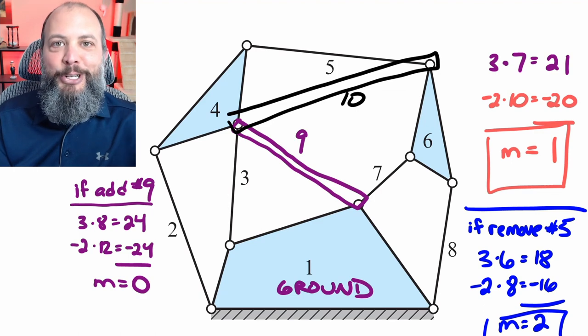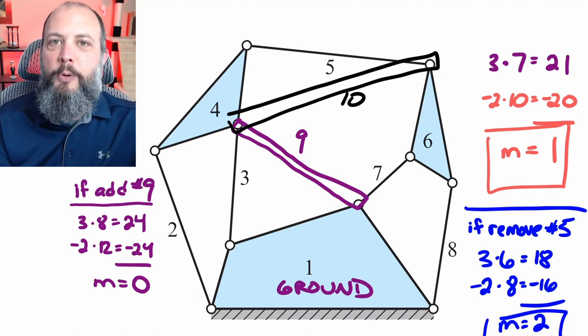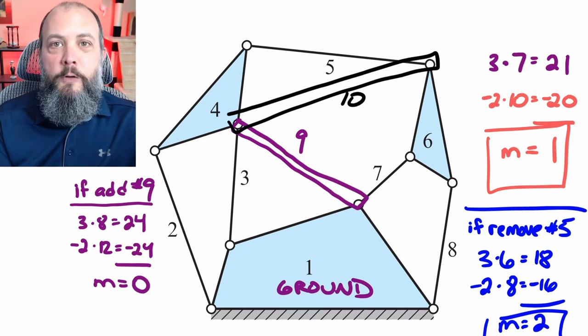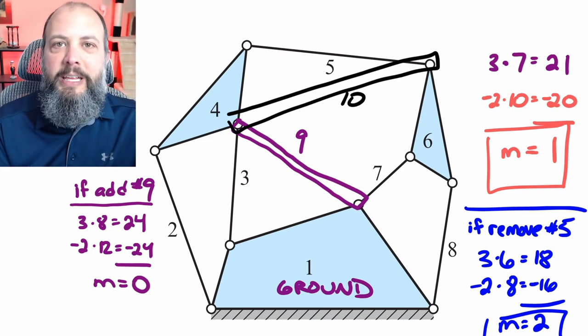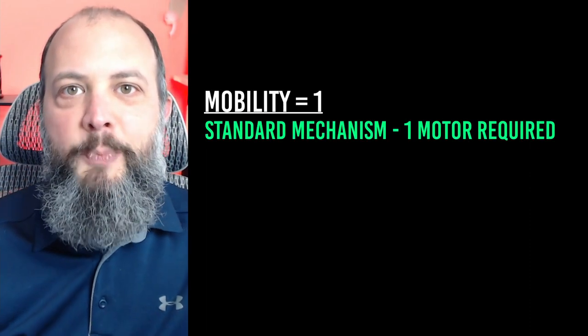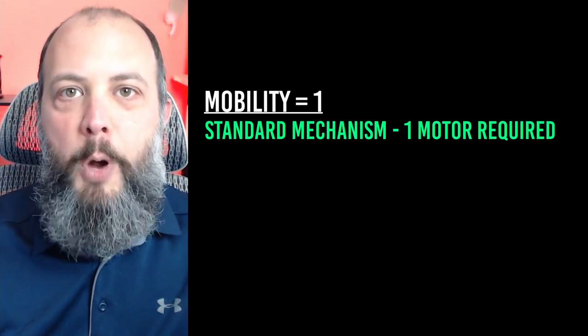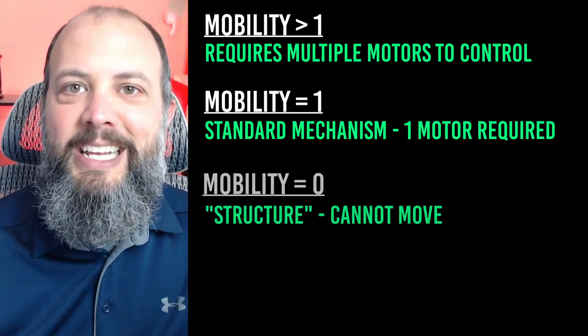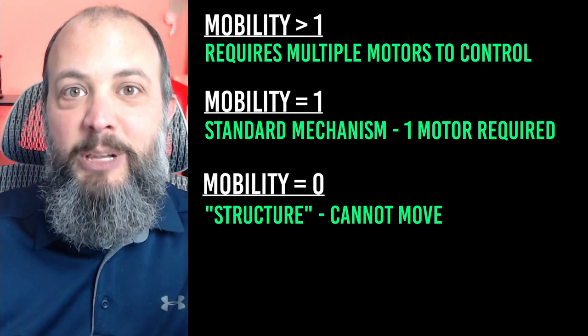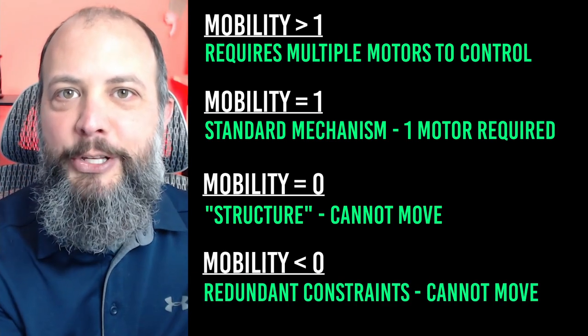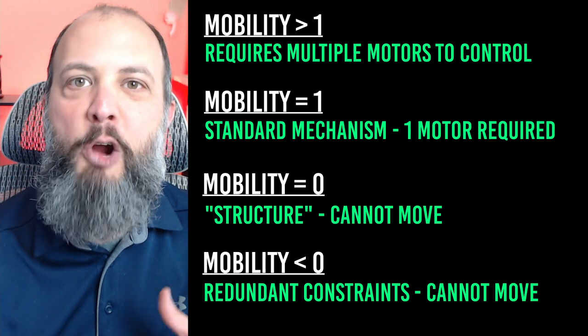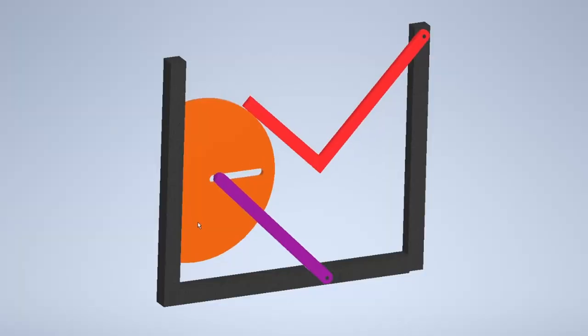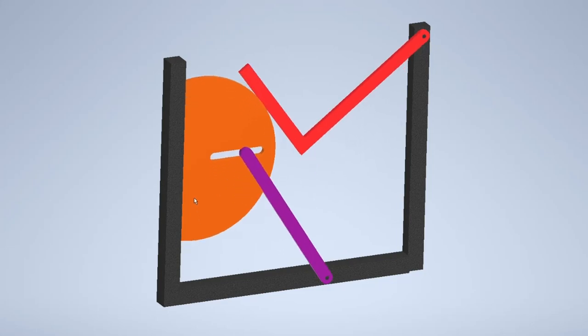And if you add another link, which I'll label here as number 10, that would lead to a mobility of negative one, which adds redundancy, which means that even if you remove a link, the system would still be locked. So mobility of one is your basic standard mechanism that can be controlled with one motor. Mobility higher than one means you need multiple motors to control it. Mobility of zero means it is locked in place and can't move. And mobility of negative values means that not only is it locked, there are redundant constraints so that you can even remove pieces and it would still be locked.